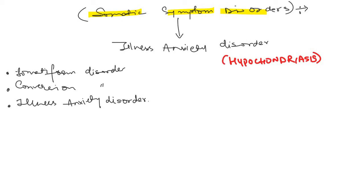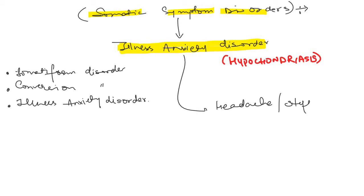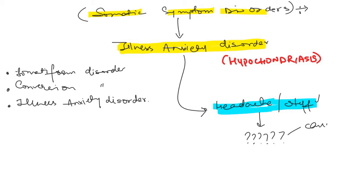In illness anxiety disorder, what happens is that there may be symptoms like headache or any other complaint, but the patient is not concerned about the symptoms. The patient is not concerned about the headache or the vomiting — what the patient is concerned about is what is causing those symptoms. For example: 'Doctor, do I have cancer? Do I have rheumatoid arthritis?' The patient is concerned about the disease itself.